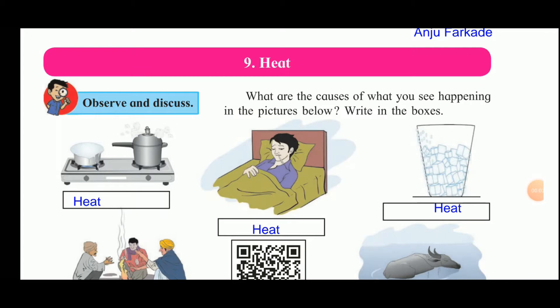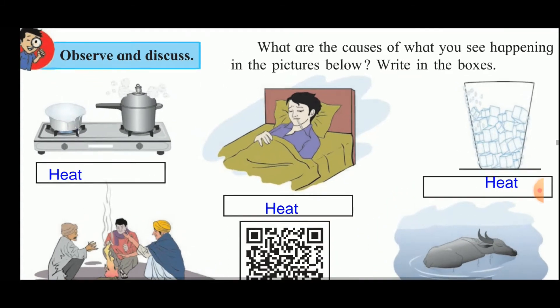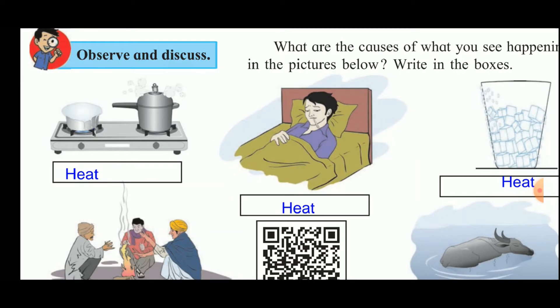Let us begin the next chapter on heat. Observe the pictures given below and write down the causes of what you see happening in each picture. In the first picture, milk is kept on the gas and a pressure cooker is also there. The milk boils and the cooker whistles because of the heat given by the gas.